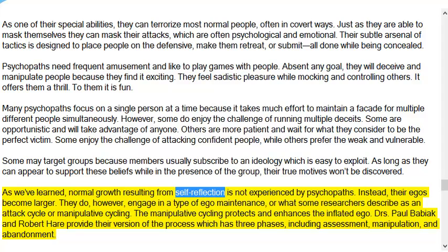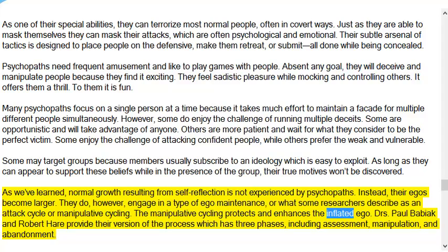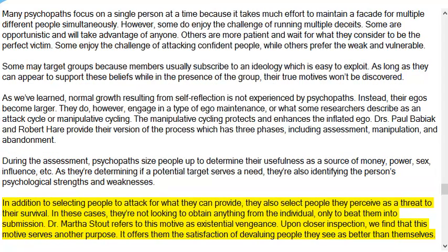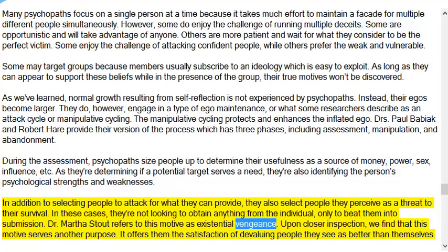Normal growth resulting from self-reflection is not experienced by psychopaths. Instead, their egos become larger. They engage in a type of ego maintenance — what some researchers describe as an attack cycle or manipulative cycling. Doctors Paul Babiak and Robert Hare provide their version of the process, which has three phases: assessment, manipulation, and abandonment. During the assessment, psychopaths size people up to determine their usefulness as a source of money, power, sex, influence, etc., and identify the person's psychological strengths and weaknesses. In addition to selecting people for what they can provide, they also select people they perceive as a threat to their survival. In these cases, they're not looking to obtain anything — only to beat them into submission. Dr. Martha Stout refers to this motive as existential vengeance, which also offers the satisfaction of devaluing people they see as better than themselves.